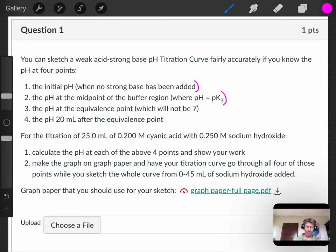So this problem says calculate the pH at each of the four above points and show your work. Make the graph on graph paper and have your titration curve go through all four of those points while you sketch the whole curve from 0 to 45 milliliters of sodium hydroxide added. So how do we do this?